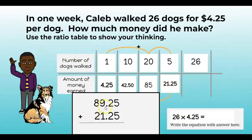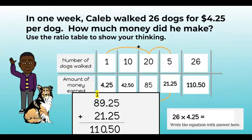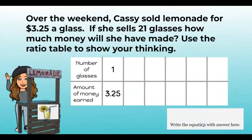Now I'm going to add that to my group of five: eighty-nine dollars and twenty-five cents plus twenty-one dollars and twenty-five cents. Line up your place values — the decimal point helps us here. Twenty-five plus twenty-five is fifty cents. Nine plus one is ten — carry that one. One plus eight plus two is eleven, so we have one hundred and ten dollars and fifty cents that Caleb made in a week. Fabulous job, Caleb! Don't forget to finish your equation.